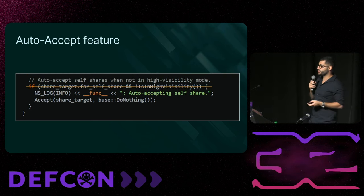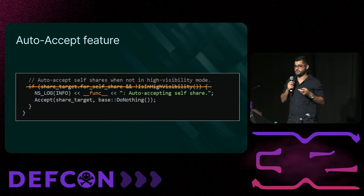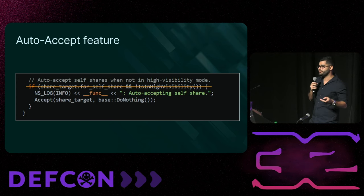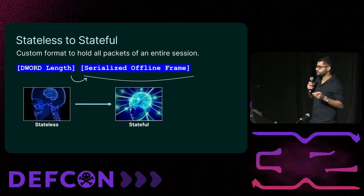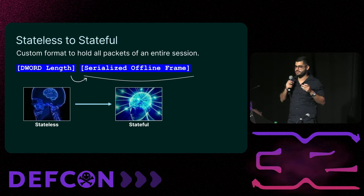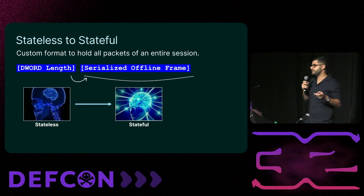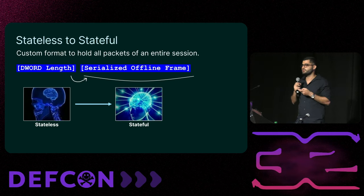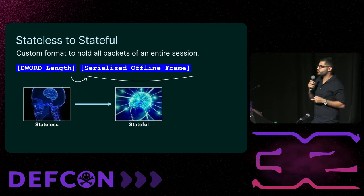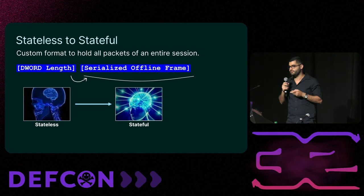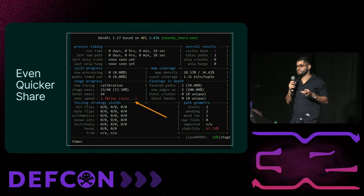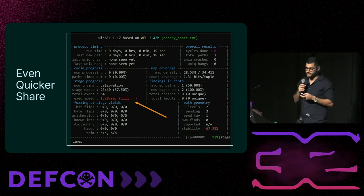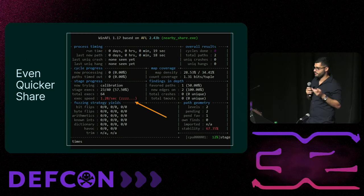We located the relevant binary and patched it — now our fuzzing target automatically accepts every file every time. Next we needed a harness that could handle an entire session during each fuzzing iteration. We created a simple binary format to encapsulate all packets for an entire session: a straightforward four bytes for length followed by a serialized OfflineFrame of that length. At this stage we were ready to start fuzzing QuickShare for Windows.